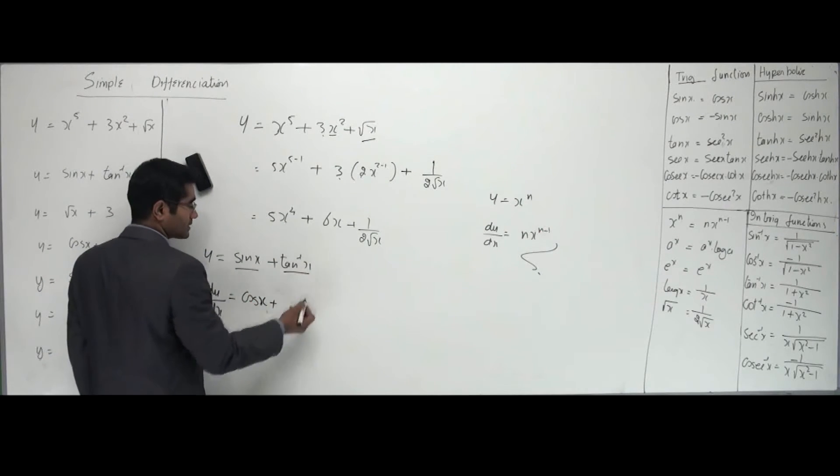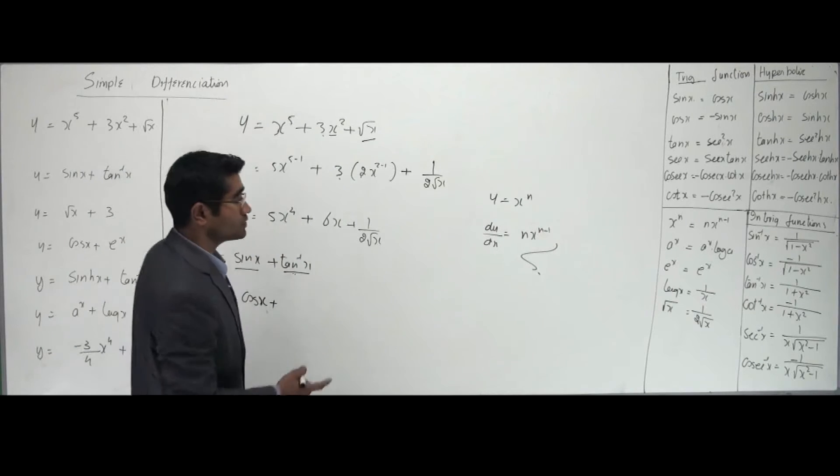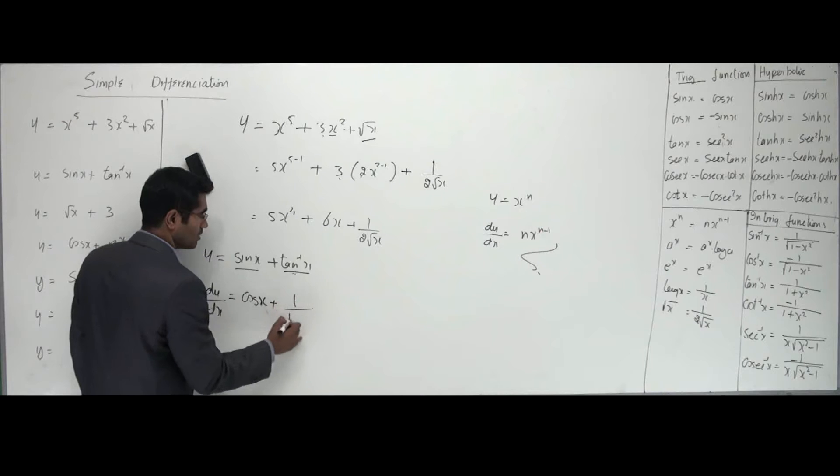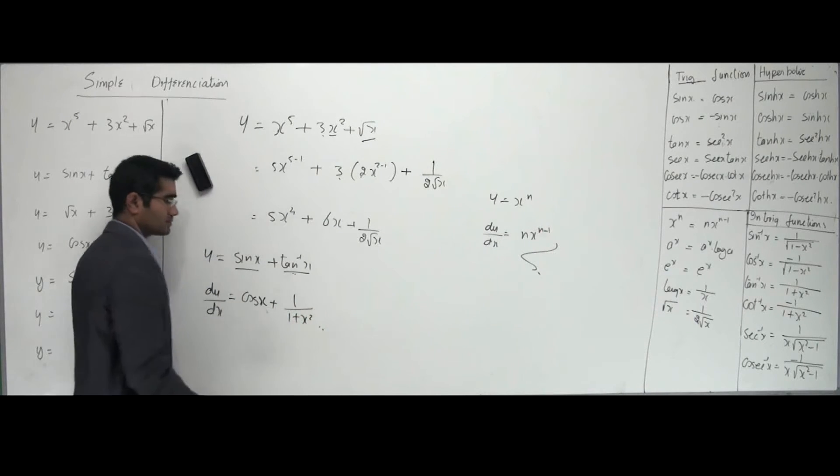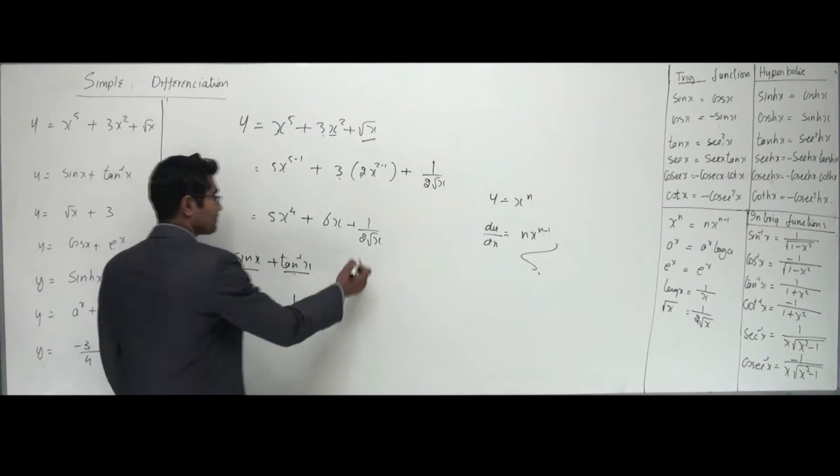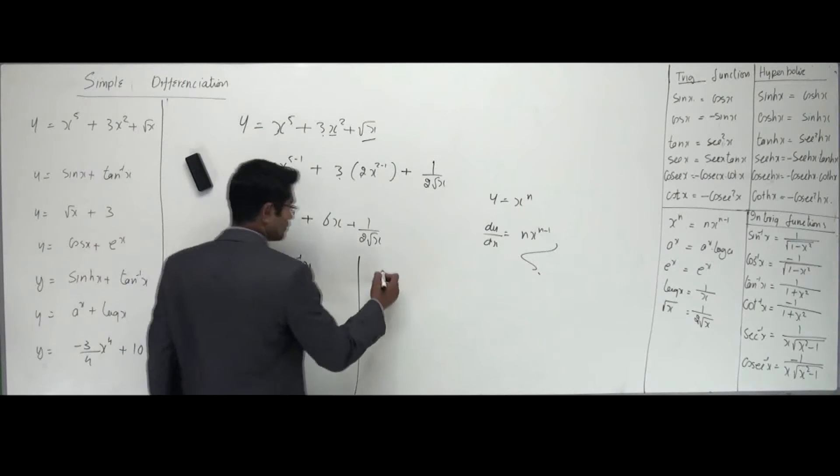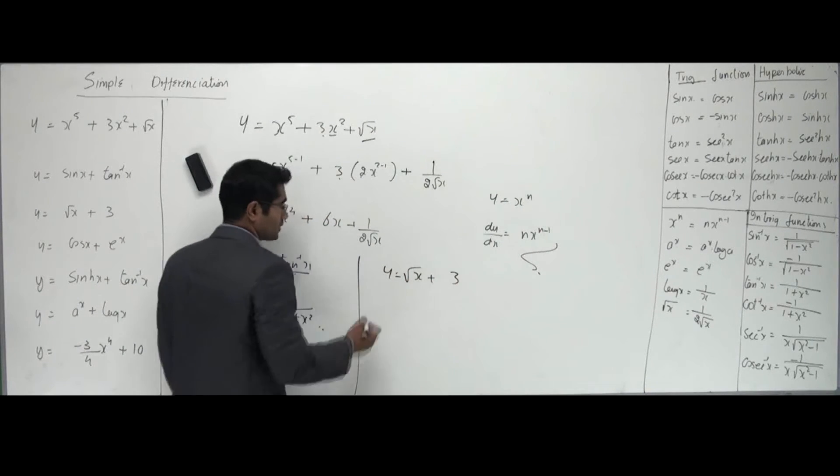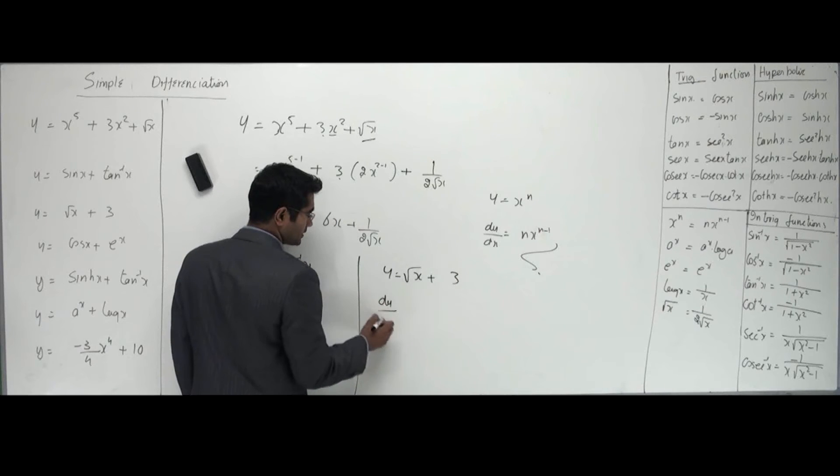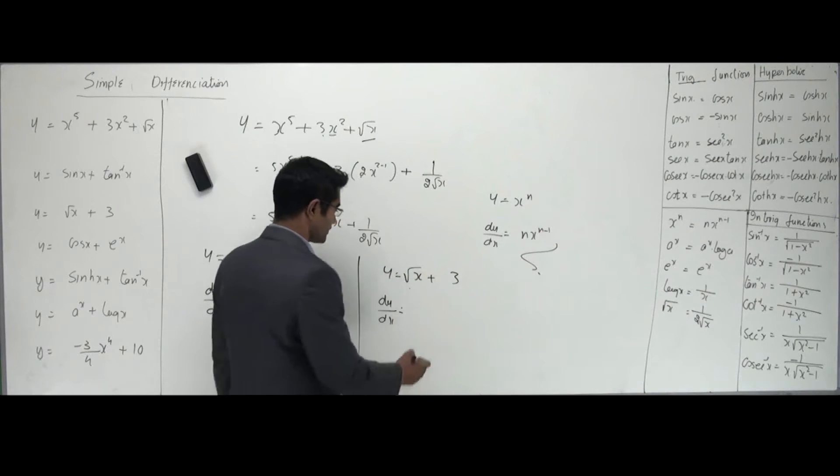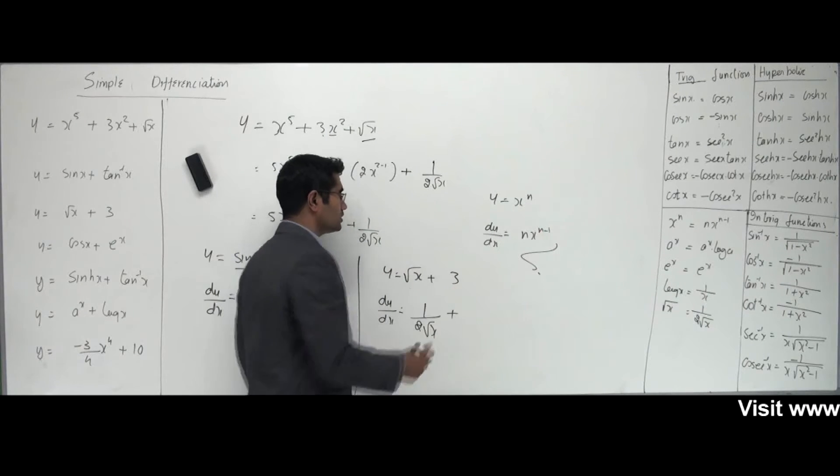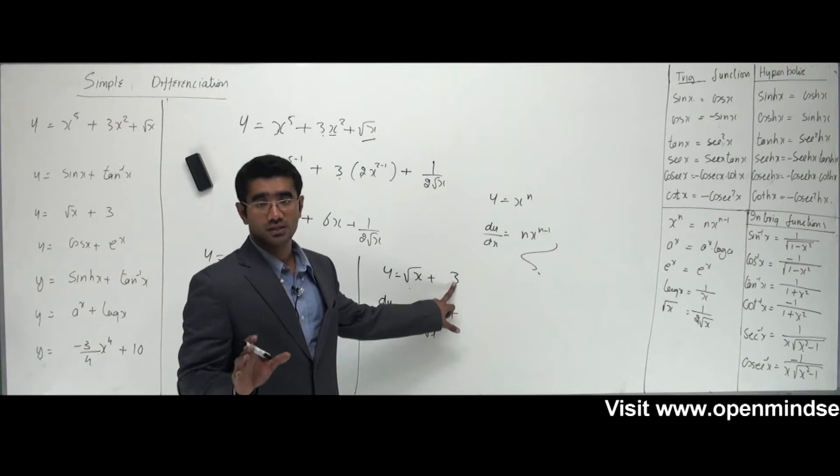It is tan inverse x. How do you differentiate this? Inverse functions: that is 1 over 1 plus x squared. Anything else? Nope. Let's go with the third one: y equals root of x plus 3. Differentiate this. dy/dx: root x is 1 over 2 root x. If you know this formula, it's very simple problems. Something new to learn: differentiation of a constant or number that doesn't have anything in terms of x is 0. Keep that in mind.